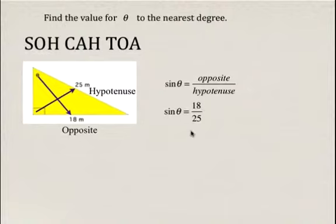Now we have to get theta by itself. We're going to use the opposite operation of sine, which is inverse sine or sine to the negative 1. So we're going to do sine to the negative 1 of 18 divided by 25.